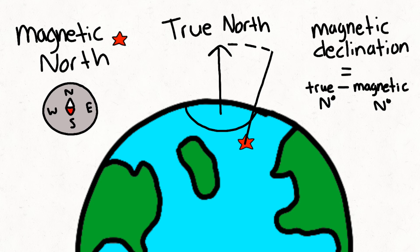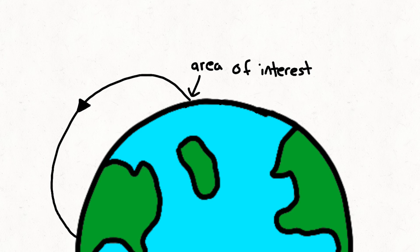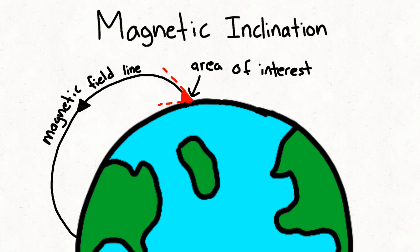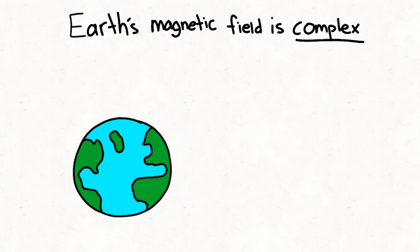The difference between true and magnetic north is measured in an angle known as the magnetic declination. The angle between Earth's surface and the magnetic field lines is known as the magnetic inclination. Earth's magnetic field is very complex. The magnetic field is not uniform around the planet and is actually constantly changing.